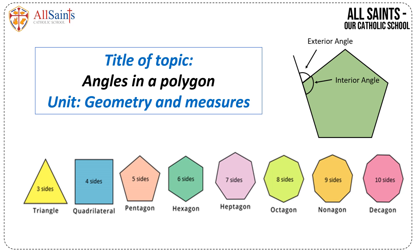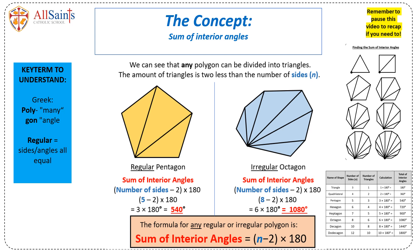In this video, we're going to look at angles in a polygon. We know that the sum of interior angles of a triangle is 180 degrees and a quadrilateral is 360 degrees.